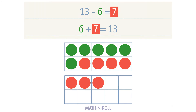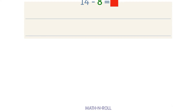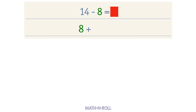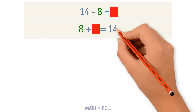Let's do another one. 14 minus 8 equals an unknown number. Use a related addition fact to solve: 8 plus an unknown number equals 14.